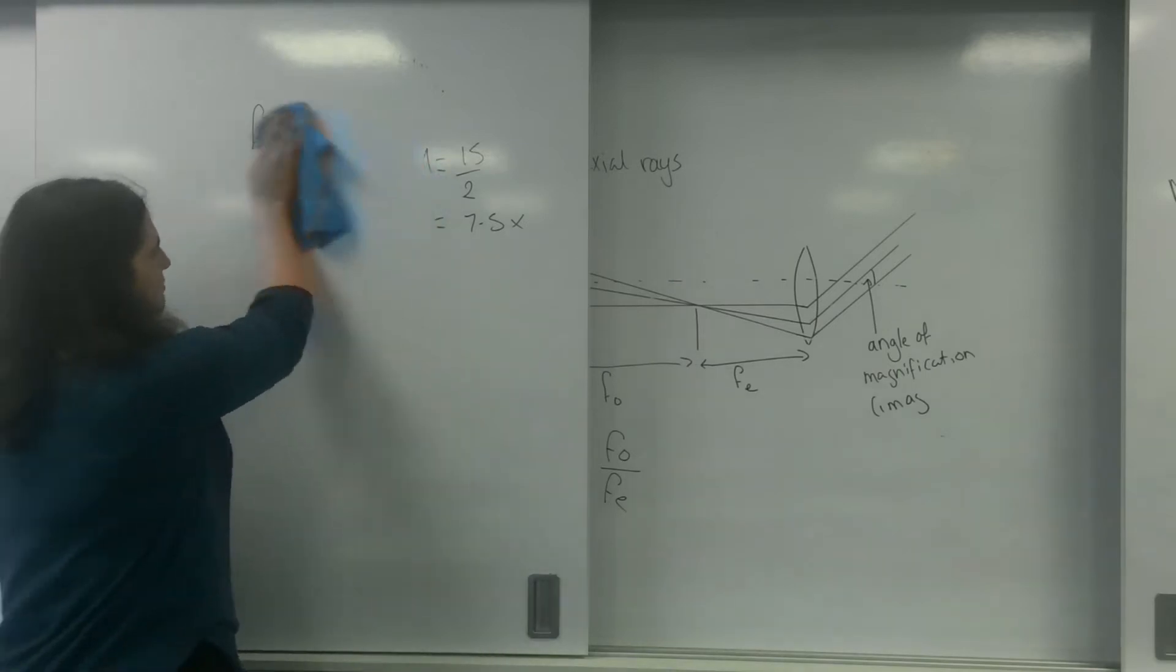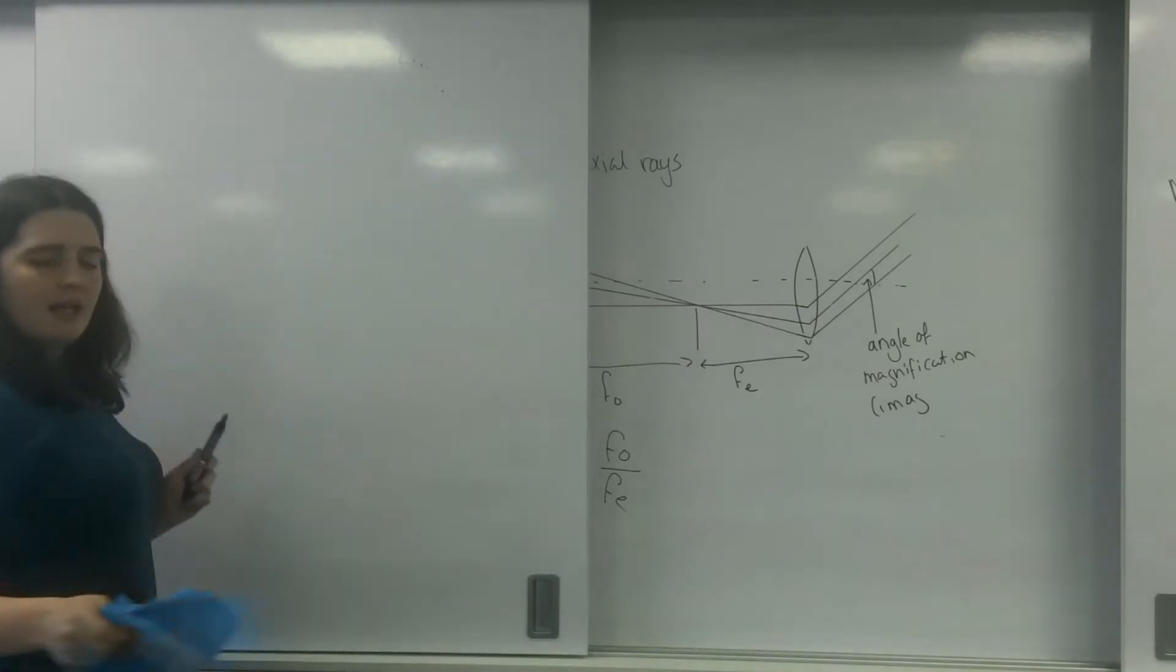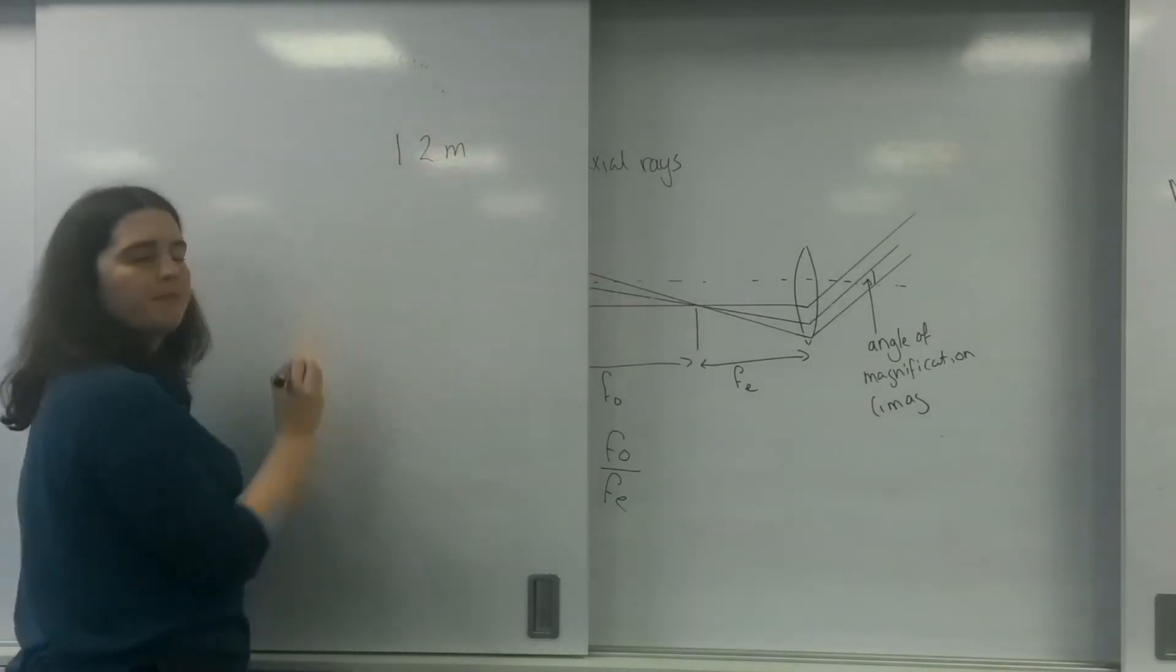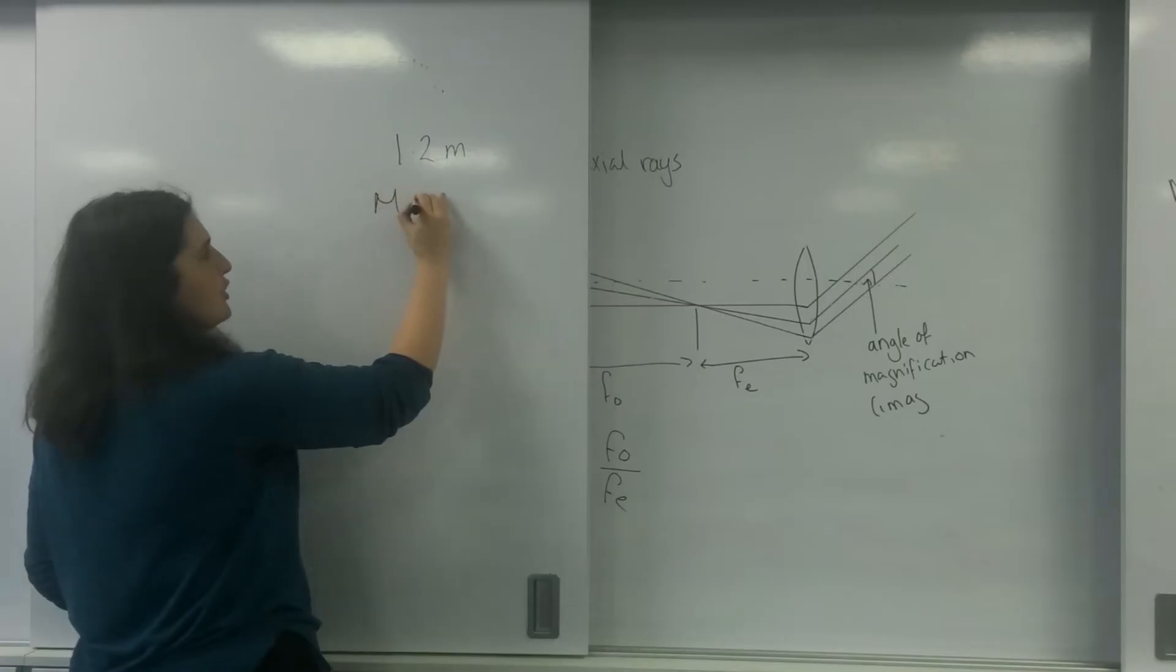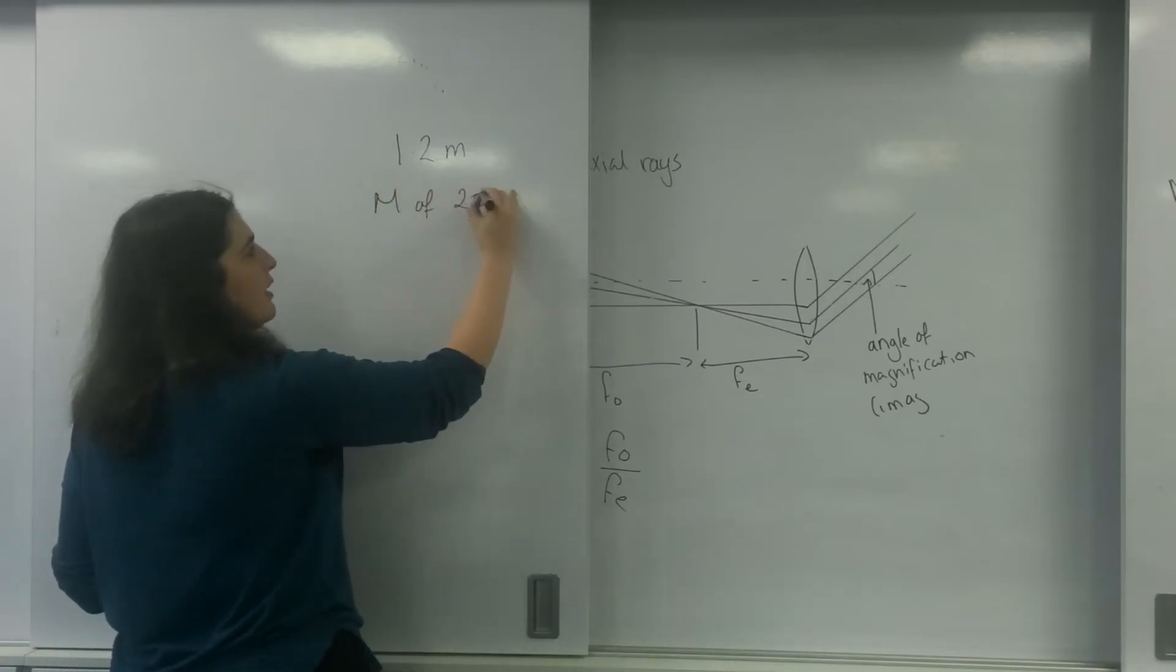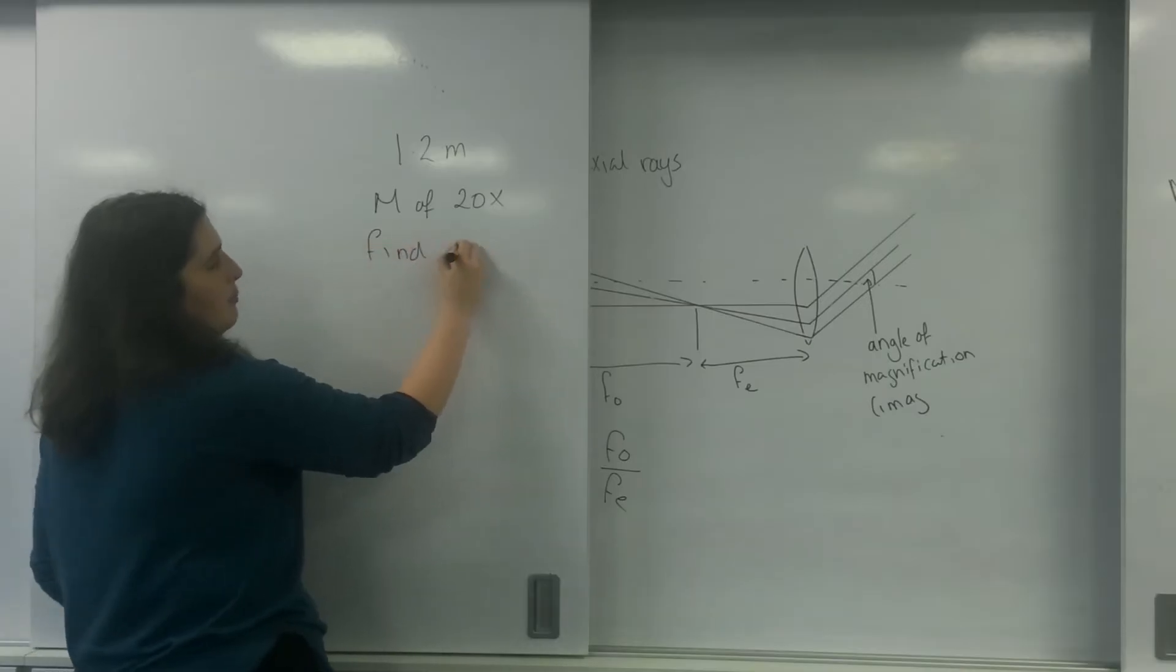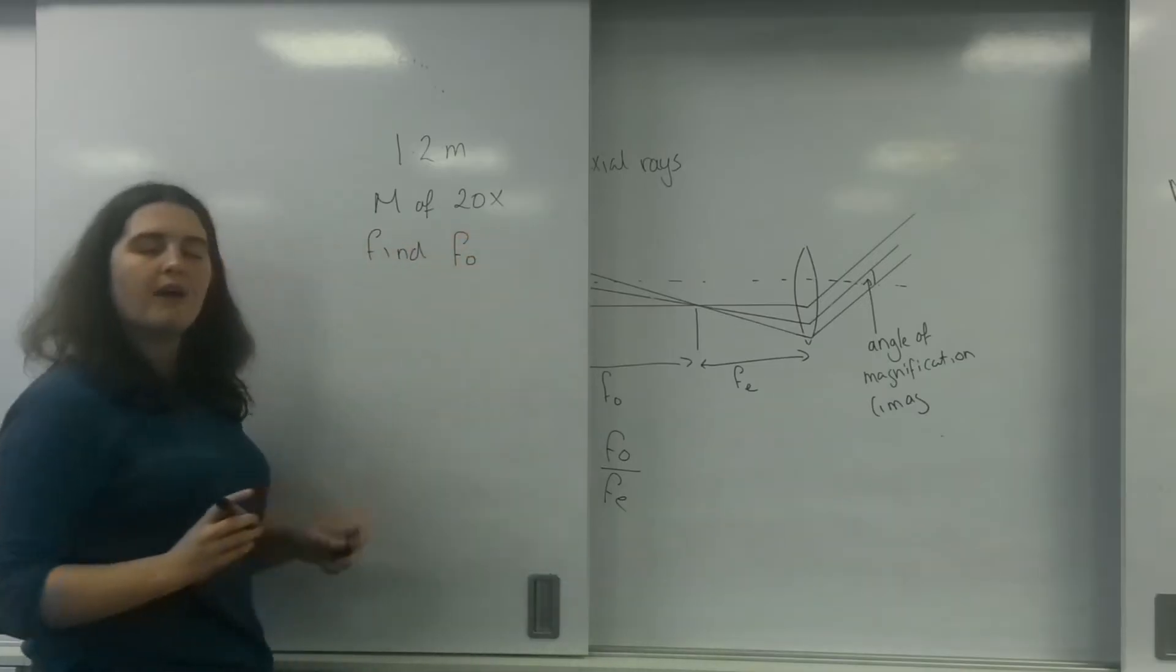But let's change this up a bit. Let's say I had a telescope that was 1.2 meters and had a magnification of 20 times. And I want to find my focal length for F0.